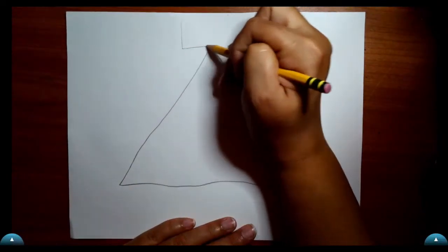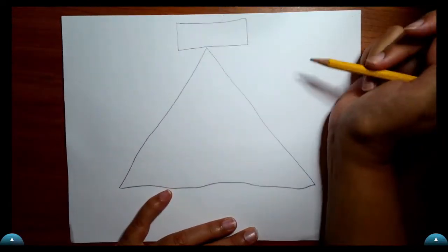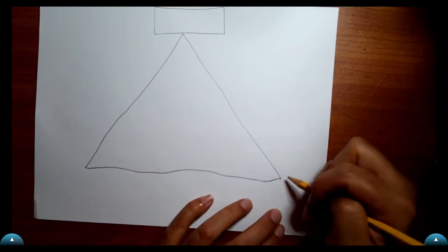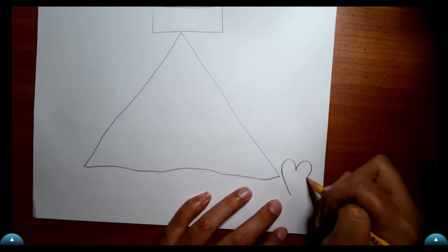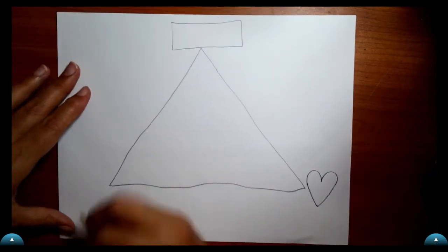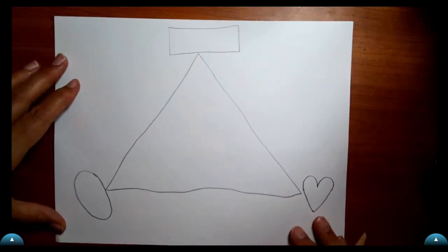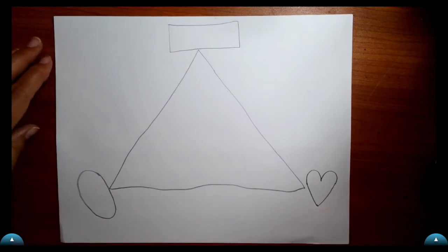First we're going to draw one shape up above the top of our triangle. Any shape you want. I did a red rectangle. Then do another shape at another point of the triangle. And then I did an oval at the third point.